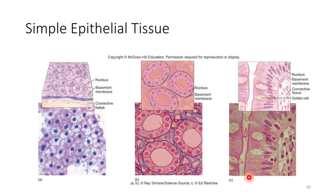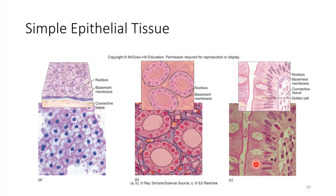On the right is an example of columnar epithelium — still simple, so a single layer of cells, but columnar in shape. Looking at individual cells laid out horizontally in the picture, they're very long compared to how wide they are. Simple columnar epithelium is found in places that require a lot of absorption. For example, in the intestine, these cells are great for absorbing things into themselves and then transporting them into the bloodstream.